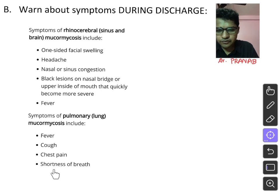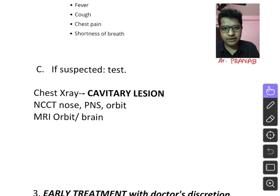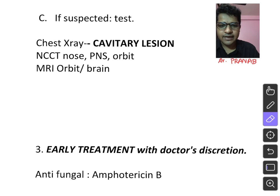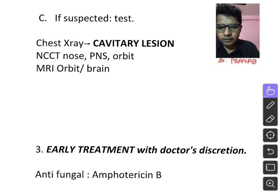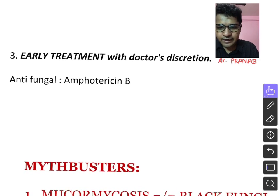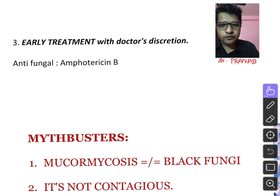Symptoms of pulmonary mucormycosis to watch for after hospital discharge include fever, cough, chest pain, and shortness of breath. Physicians must be very vigilant about these symptoms and must rule out mucormycosis. A simple chest X-ray may show a cavitary lesion increasing suspicion. If there is sufficient clinical suspicion, NCCT of the nose, PNS, and orbit should be done. MRI orbit and brain are always more sensitive than CT. Early treatment with Amphotericin B under doctor prescription may save the patient despite the high mortality risk.